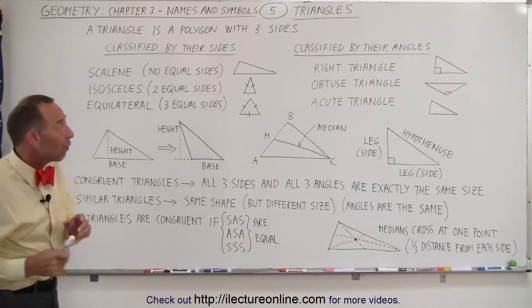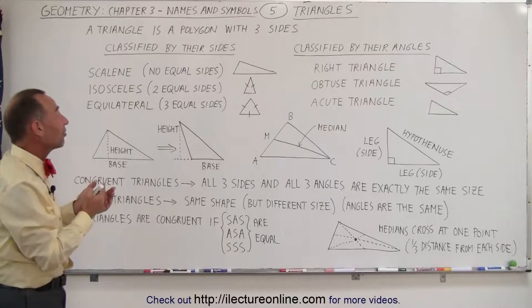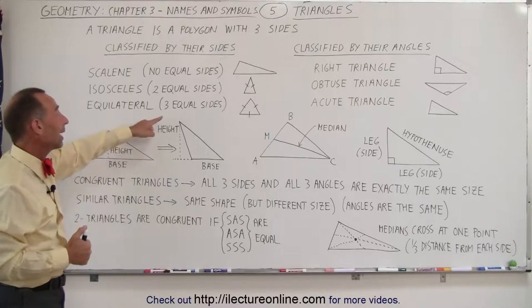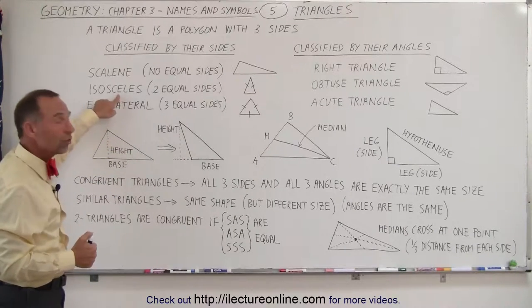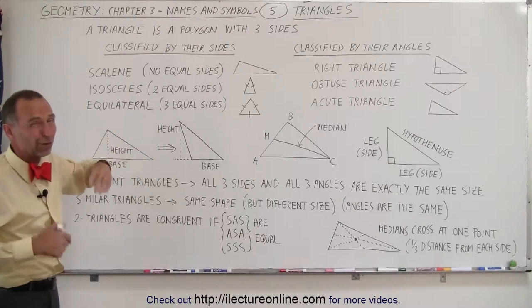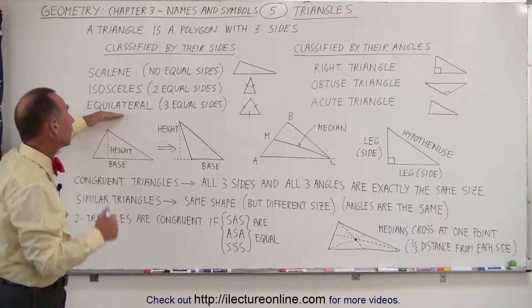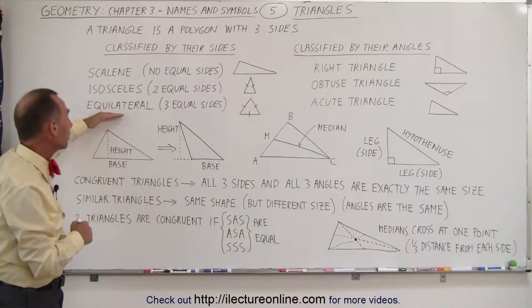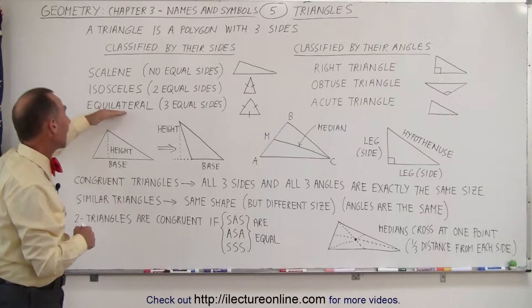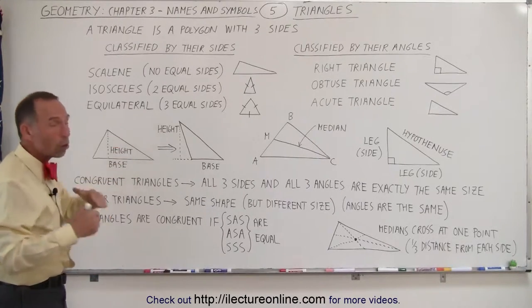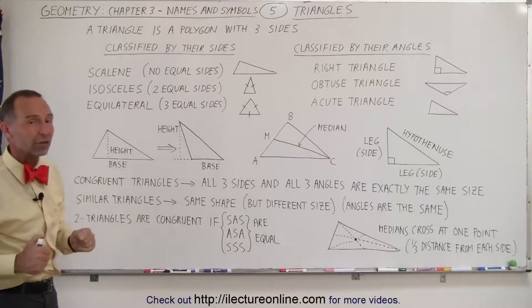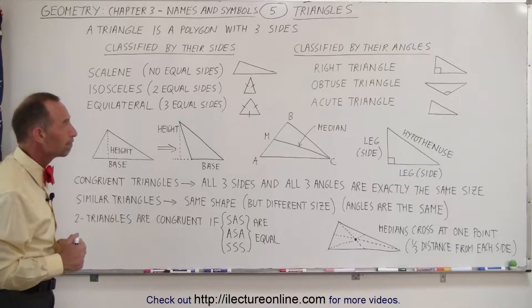Now if all three of the sides are the same length, instead of calling it an isosceles triangle, we call it an equilateral triangle. Equilateral means equal sides — all three sides are the same.